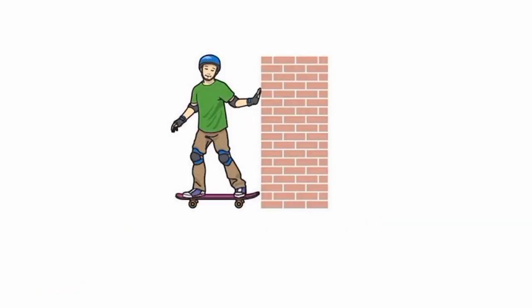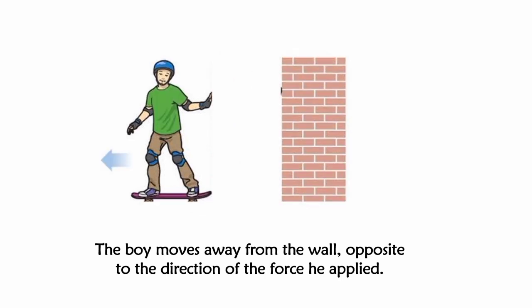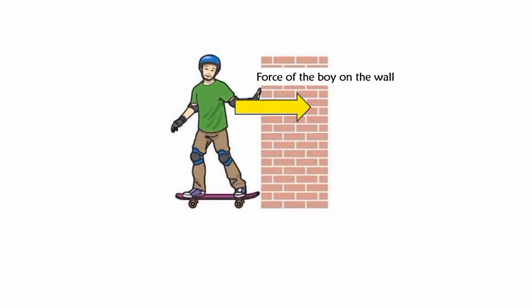Consider a boy on a skateboard, initially at rest, who pushes against the wall. What happens as the boy pushes the wall while on a skateboard? The boy moves away from the wall, opposite to the direction of the force he applied. The action force is the force exerted by the boy on the wall. The reaction force is the force exerted by the wall against the boy.